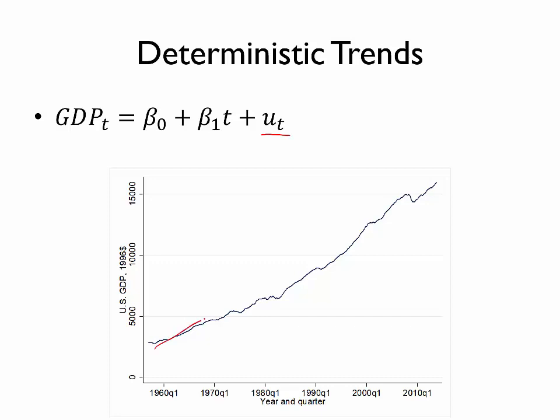I hope you'll agree that a linear function of time probably is not correct here. If I tried to match this graph to a straight line, it probably would not be very close. In other words, it seems like a deterministic trend is probably not the right way to model a variable like GDP and probably many other economic quantities.